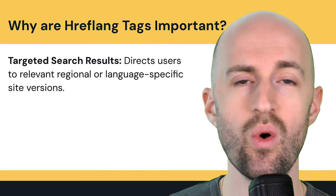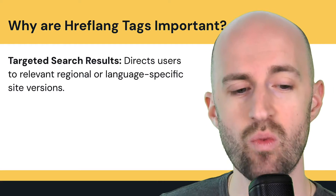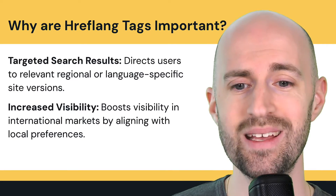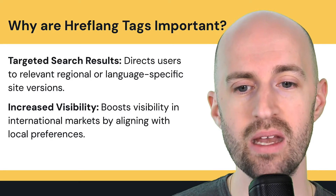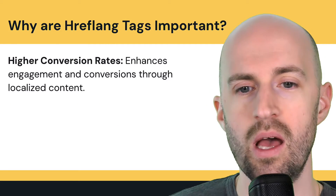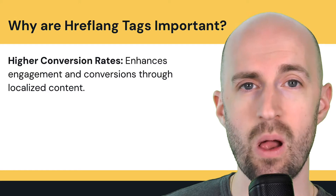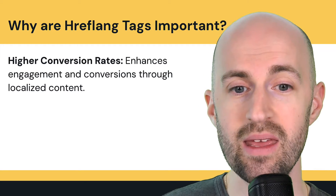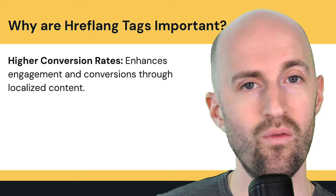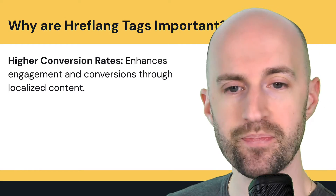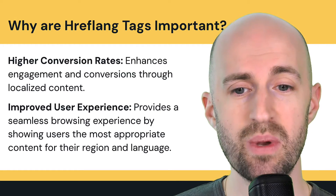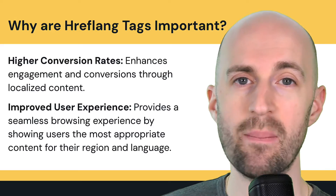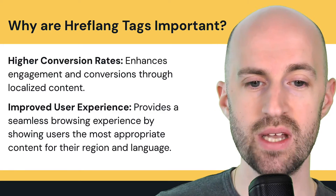Targeted search results bring users to the right page that's relevant to them, leading to increased visibility by boosting rankings in international markets by aligning with local preferences. It also leads to higher conversion rates — when someone lands on content that's in their language and for their culture or country, it increases engagement and conversions of whatever products or services they might be buying. This improves the user experience, providing a seamless browsing journey from searching in Google to landing on the page and purchasing.